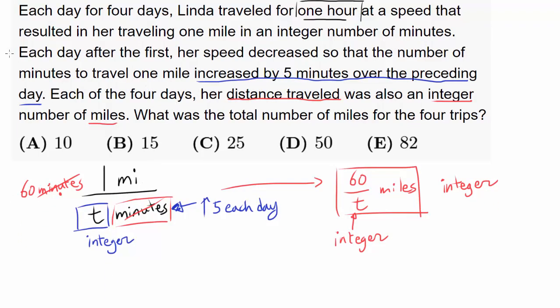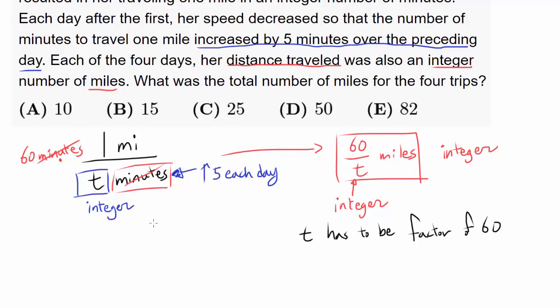Well, that's telling us that T has to be a factor of 60. Because when T is a factor of 60, 60 divided by T should be integer also. So let's try to find what factors of 60 there are.